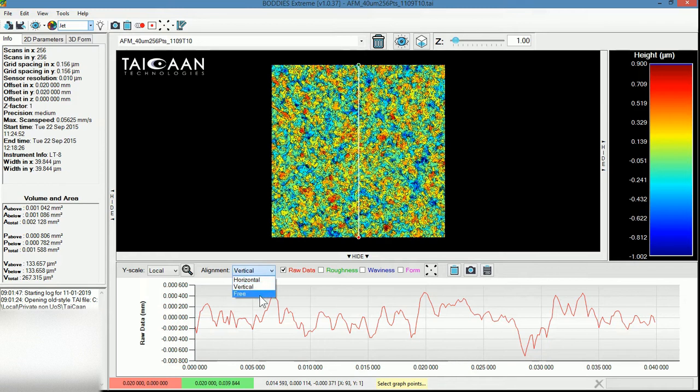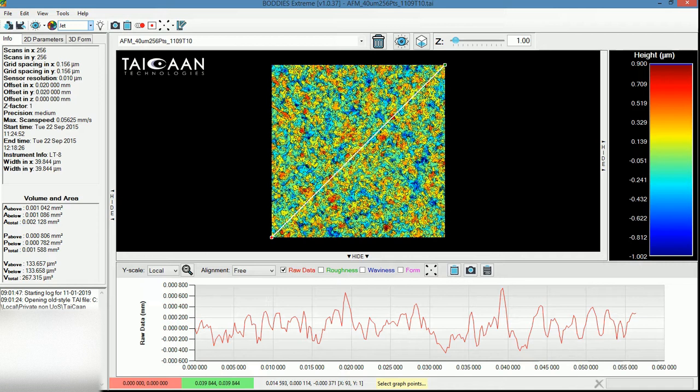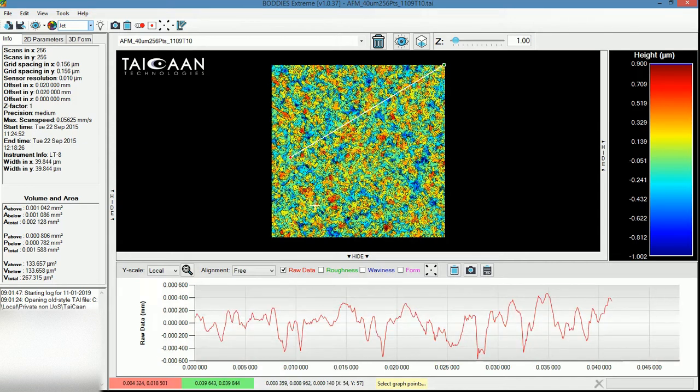We have a free view—with the free view, essentially it starts off as a diagonal view across the dataset, but the points here are movable as shown, so that you can just draw the line in the object space so that you can get the cross-section that you desire for your data analysis.